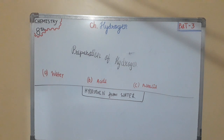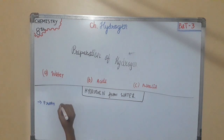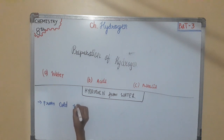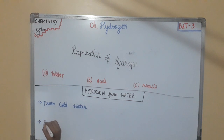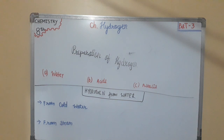From water, there are two sub-methods: first is from cold water, and second is from steam. From cold water — highly reactive metals like sodium, potassium, and calcium, on reacting with cold water, give hydrogen and the respective metallic hydroxides.